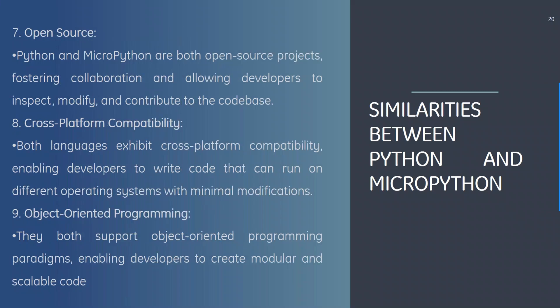Further similarities: both Python and MicroPython are open source projects, fostering collaboration and allowing developers to inspect, modify, and contribute to the codebase. Both exhibit cross-platform compatibility, enabling code to run on different operating systems with minimal modifications. They both support object-oriented programming paradigms, enabling developers to create modular and scalable code.